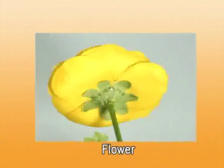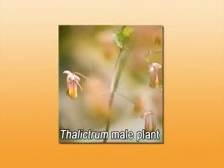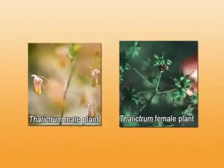Now coming to the individual flower: flowers here are bracteate, bracteolate, and pedicellate — meaning all the flowers have a stalk. The flowers are mostly bisexual, meaning both male and female parts are borne on the same flower, but there is an exception in Thalictrum where it is unisexual. Usually the flower is actinomorphic — meaning at whatever plane you cut it, it separates into two equal halves — but there is an exception in Delphinium where it is zygomorphic.